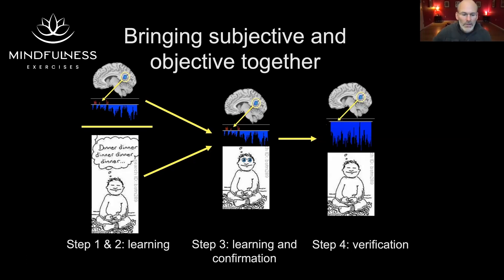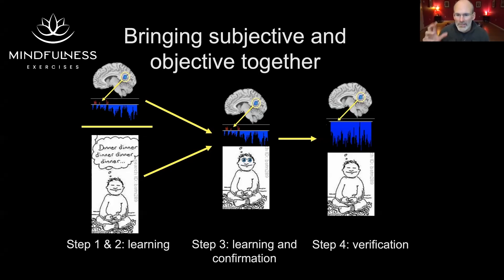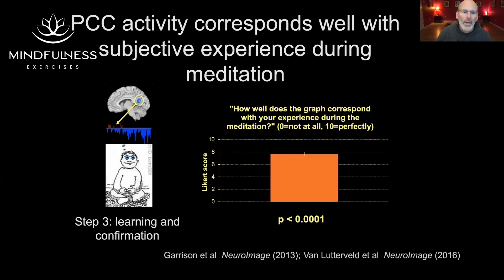People's subjective experience lined up very well with their brain activity. We started with the simple question: when you meditate, does it line up with your experience, and which way does the graph go? It was close to eight out of ten, where people in two different studies — first with fMRI feedback, and then with EEG neurofeedback — where we could give feedback from specific brain regions — confirmed this alignment.